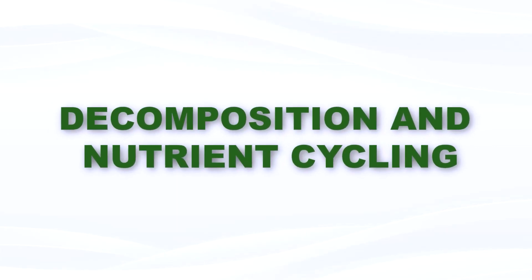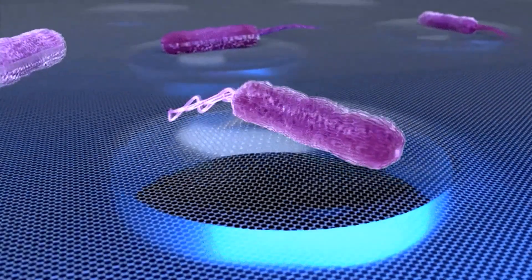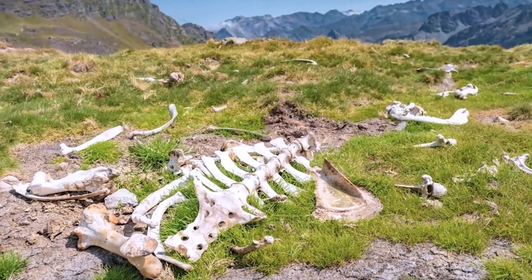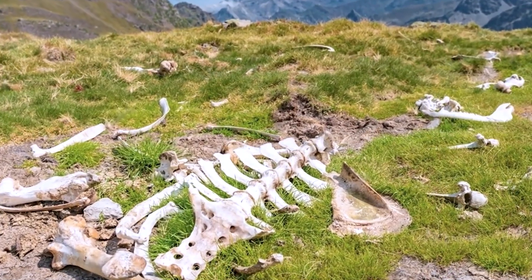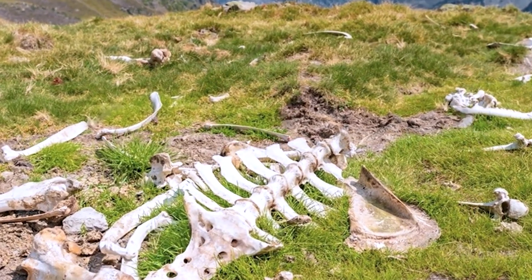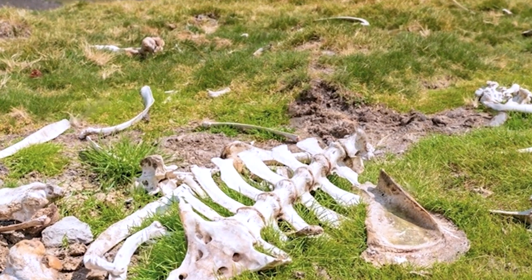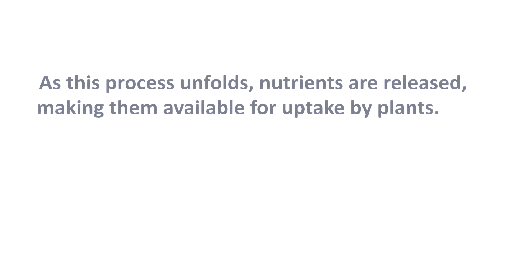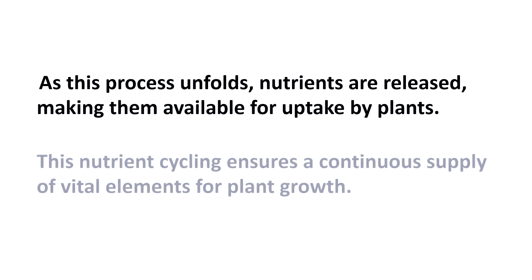Decomposition and Nutrient Cycling: Microorganisms are nature's decomposers. Bacteria and fungi break down organic matter, such as dead plants and animals, into simpler compounds through decomposition. As this process unfolds, nutrients are released, making them available for uptake by plants. This nutrient cycling ensures a continuous supply of vital elements for plant growth.